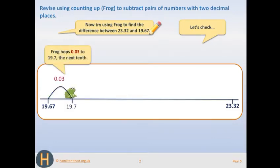The first hop is to the next tenth. We're adding 0.03 to get us to the next tenth. So we go from 19.67 to 19.7.